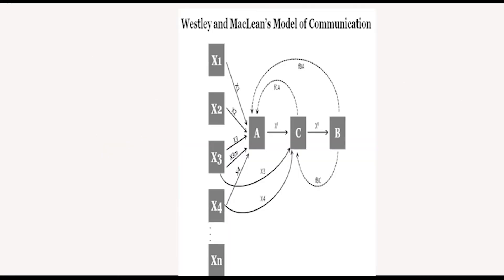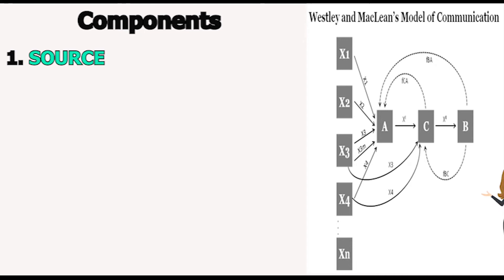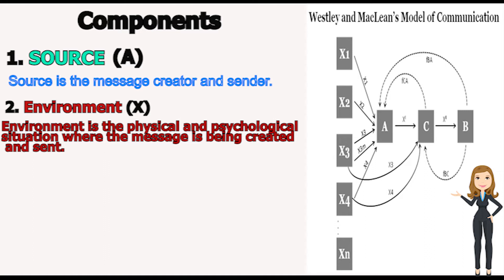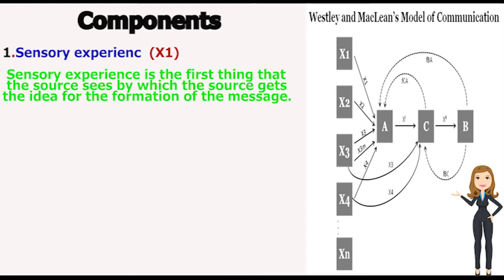If you can see the diagram of Wesley and McLean's model of communication, we will discuss its components. The first component is source — A denotes the source, which is the message creator and sender. Next is environment, denoted by X, which is the physical and psychological situation where the message is created and sent. In this model there are X1, X2, X3, X4 and infinity — these are all sensory experiences. Sensory experience is the first thing that the source perceives, from which the source gets the idea for the formation of the message.